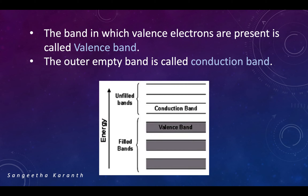Here we can see the valence band and the conduction band. The valence band, as the name indicates, consists of valence electrons, whereas the conduction band, which is the outer band, is empty. Only when the electrons from the valence band move to the conduction band will there be conduction of electricity.